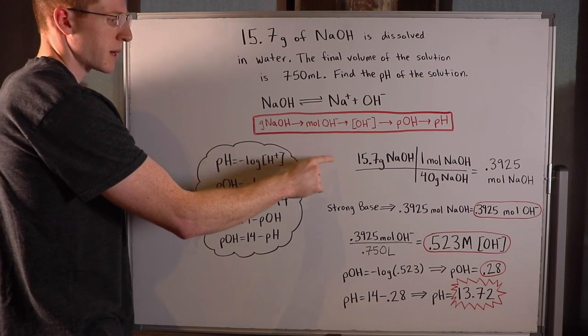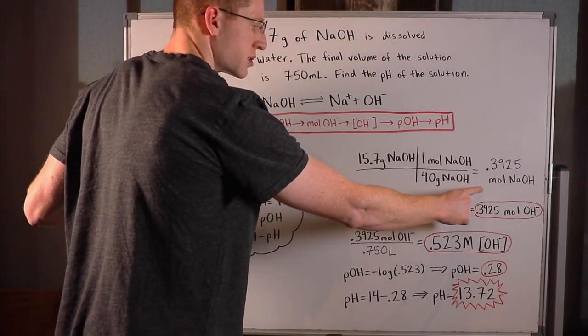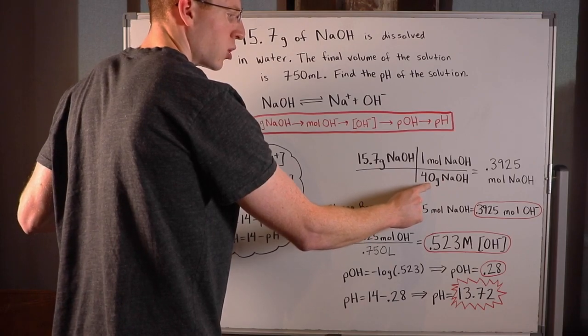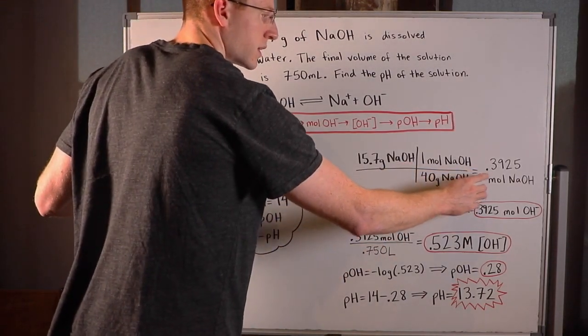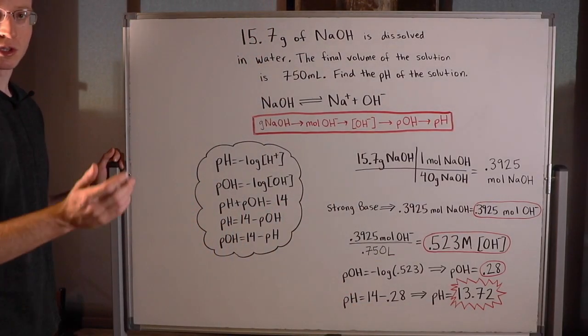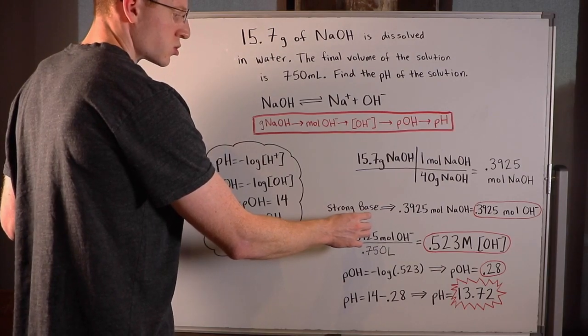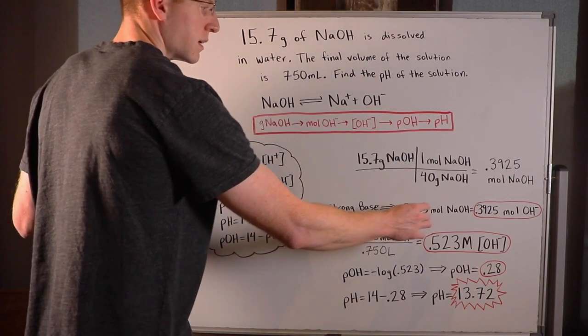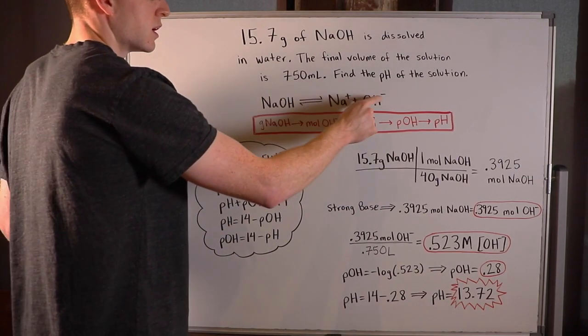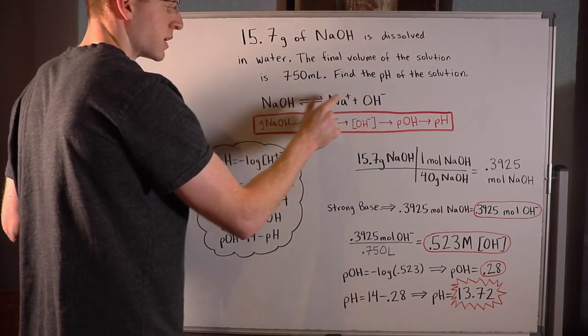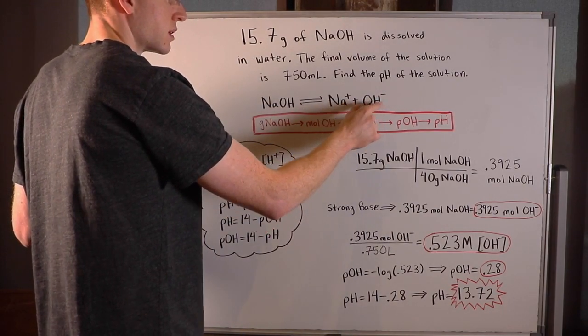So I started out with this first step by converting 15.7 grams of NaOH to moles of NaOH. And I did that by dividing by the molar mass of NaOH, which is 40 grams. And I obtained 0.3925 moles of sodium hydroxide. Since sodium hydroxide is a strong base, that means that the amount of moles of NaOH we have are going to be exactly the amount of moles of OH minus we have.